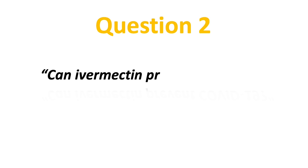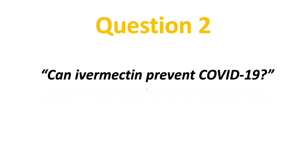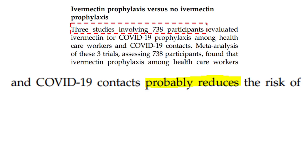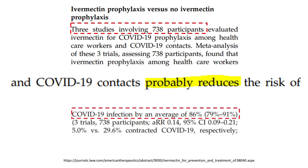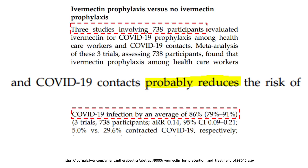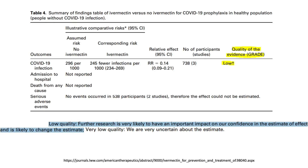Can ivermectin prevent COVID-19? For this question, the analysis looked at three different trials with a total of 738 participants. The wording from the paper stated that ivermectin probably reduces the contraction of COVID-19 by 86%. The quality of evidence is low certainty. The research group stated it really needs more future studies with a better trial design and larger sample size to have a more definitive answer.